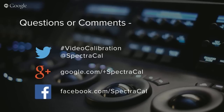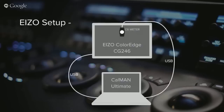Before we dive into the demo, let's go over the calibration software and hardware we'll be using today. The setup we're using is the EIZO ColorEdge CG246 monitor that has built-in 3D LUT support. The software is CalMAN Ultimate 3D LUT workflow, but you can also use CalMAN Studio. The meter is the SpectraCal C6 meter, and the patterns are the EIZO built-in pattern generator.